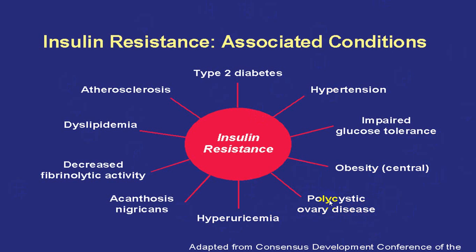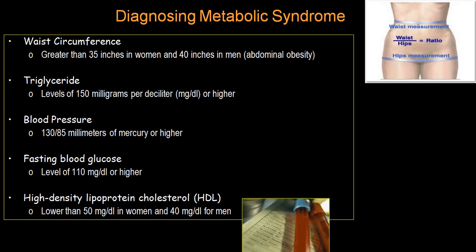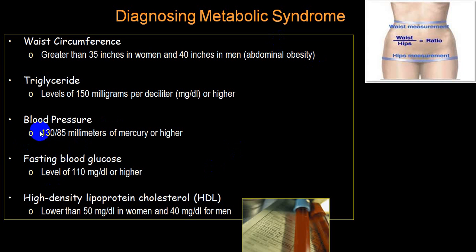Polycystic ovarian disease may also be seen in females. Diagnosis is done by clinical examination — waist circumference, blood pressure estimation, and waist-hip ratio are important — along with laboratory parameters including triglycerides, fasting blood sugar, HDL level, and LDL level.